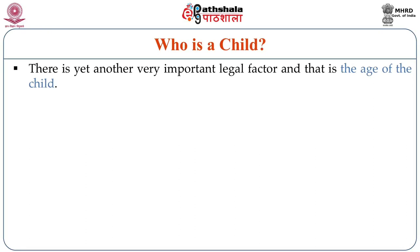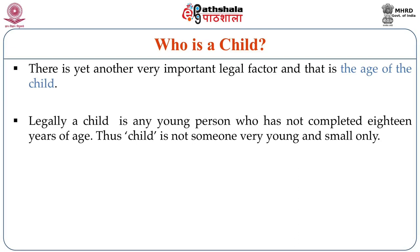If a child is a young person, child does not necessarily mean only children who are very small. As mentioned, the legal dimension covers all young persons who have not completed 18 years of age. So a child would also be somebody who is 16, 17, or 17 and a half. Until they complete 18 years of age, as a child they are entitled to certain protections, rights, guidance and supervision.